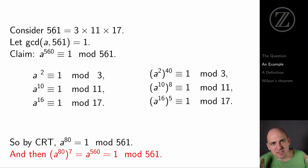I've got one more step here. I'm going to take a to the 80th congruent to 1 modulo 561, I'll raise both sides to the 7th power, and I find out that a to the 560th is congruent to 1 modulo 561.